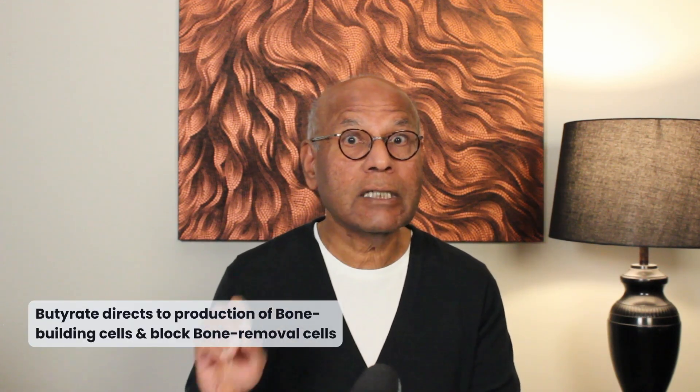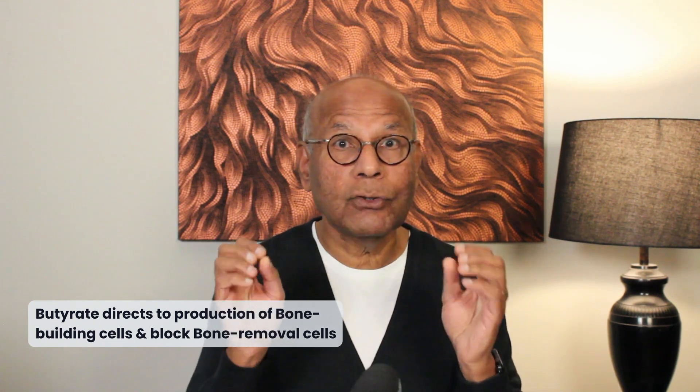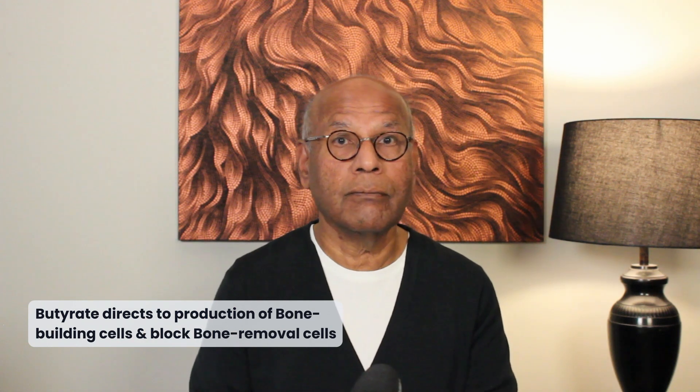The short chain fatty acids — specifically butyrate — released by the friendly bacteria into the body, travel up and impact those primitive developing cells, directing them into bone-building cells, but also blocking the effect of bone-removing cells. You eat your vegetables, your body extracts all the nutrients and passes the waste fiber to the friendly bacteria, which turns it into butyrate. That butyrate is then released and reaches deep into the bone to stop bone loss and build new bone. How wonderful is this symbiosis — you look after your bacteria by feeding them your waste fiber, and they give you gold.